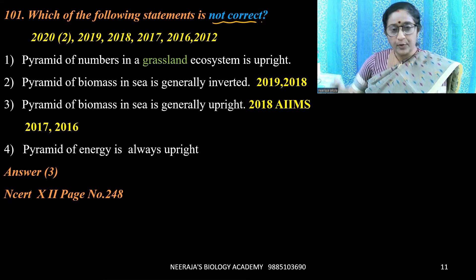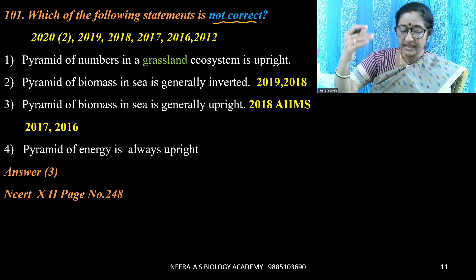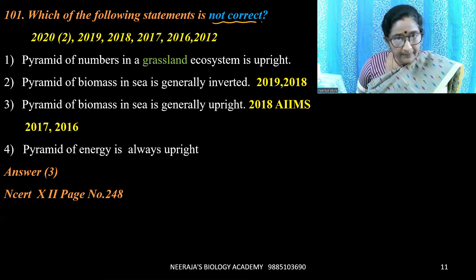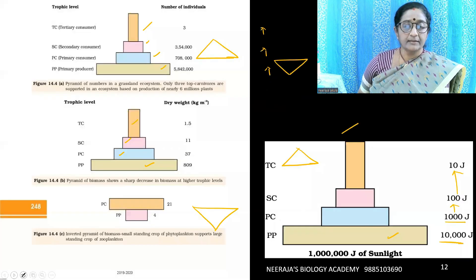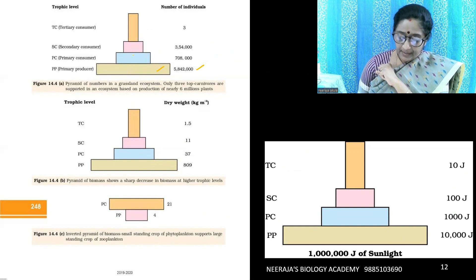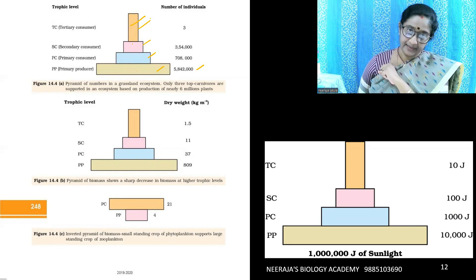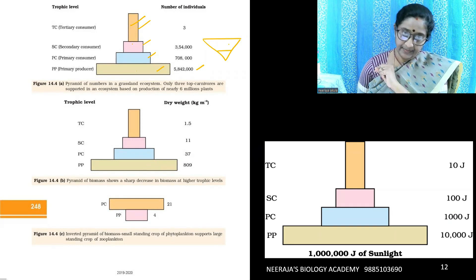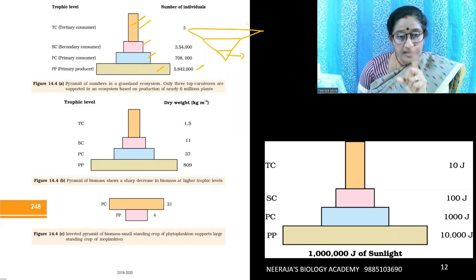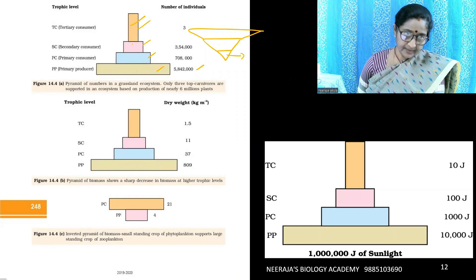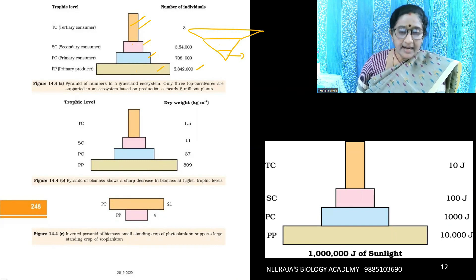Food chains take producers at the base and top-order carnivore organisms at the apex. Three types of pyramids exist: pyramid of number, pyramid of biomass, and pyramid of energy. The pyramid of number represents organisms at each trophic level — producers are more in number, with primary, secondary, and tertiary consumers decreasing. For a parasitic food chain, producers are fewer and parasites are more numerous, forming an inverted pyramid.